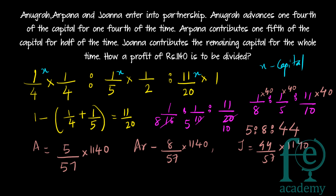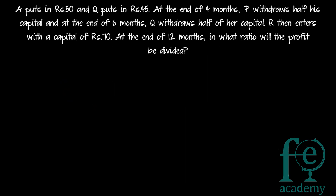So the final answer is: Anigradh will be getting a profit of 100 rupees, Arpanna will be getting a profit of 160 rupees, and Johanna will be getting a profit of 880 rupees. This is a straightforward question — just the capital amount is not given, so assume it as X, find the ratio, and solve.